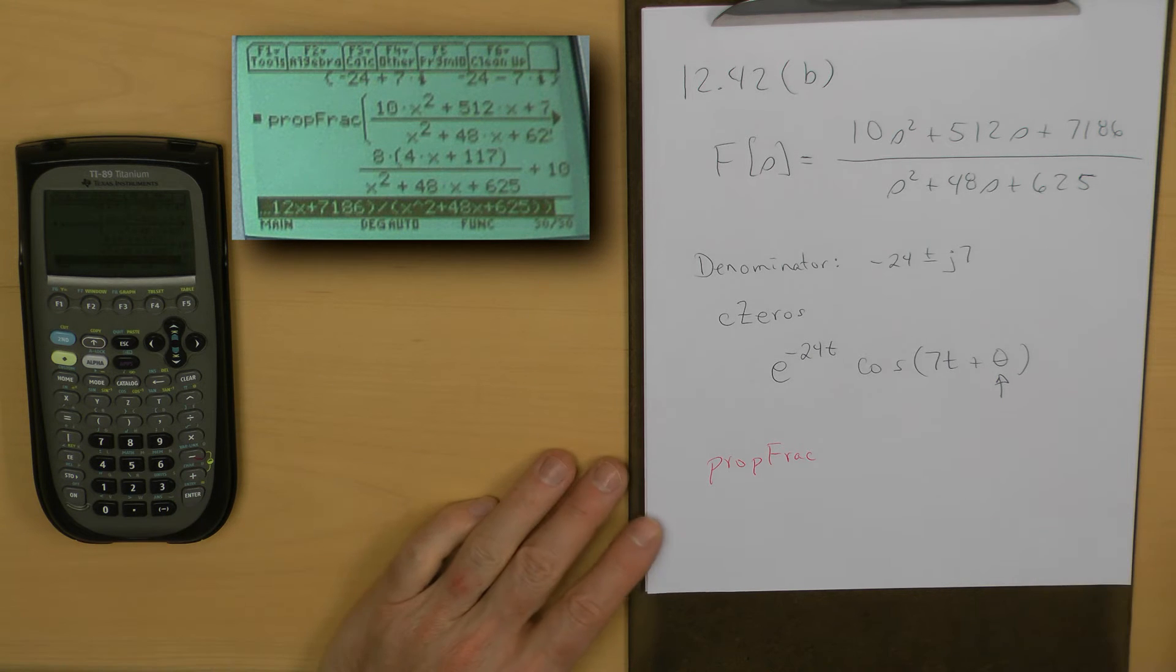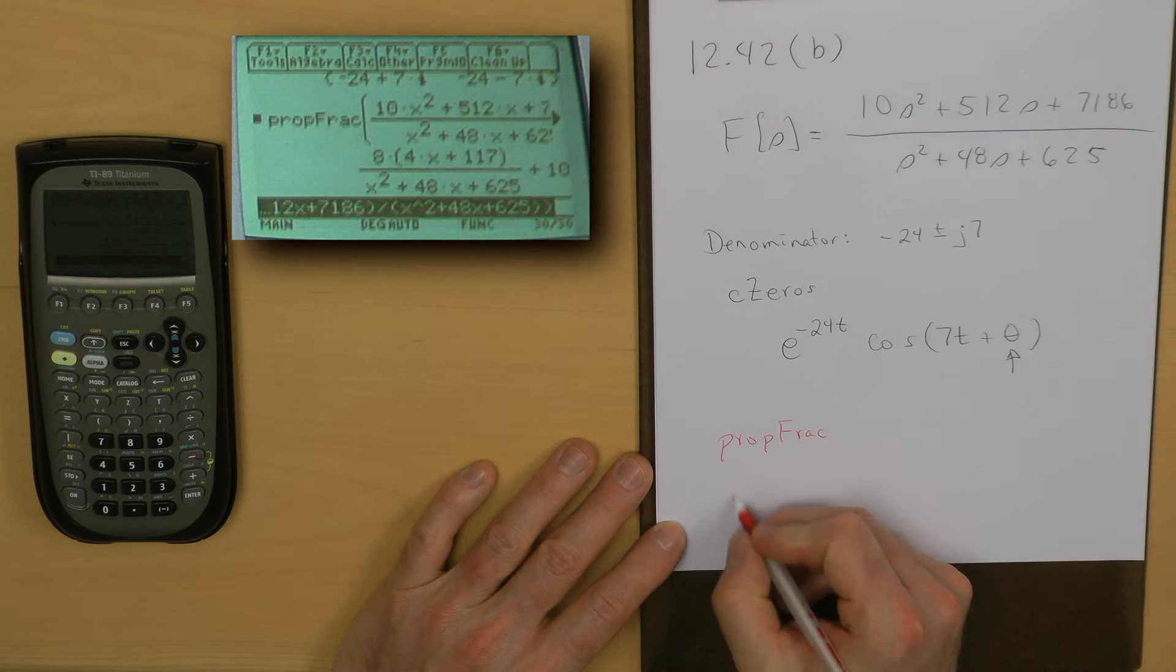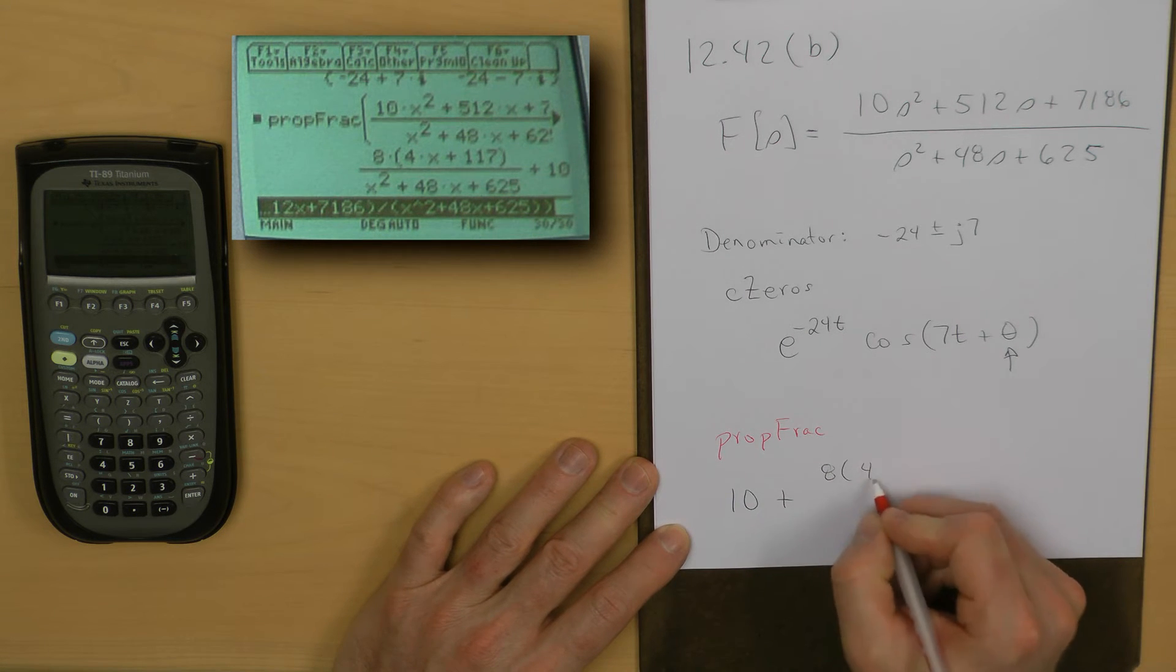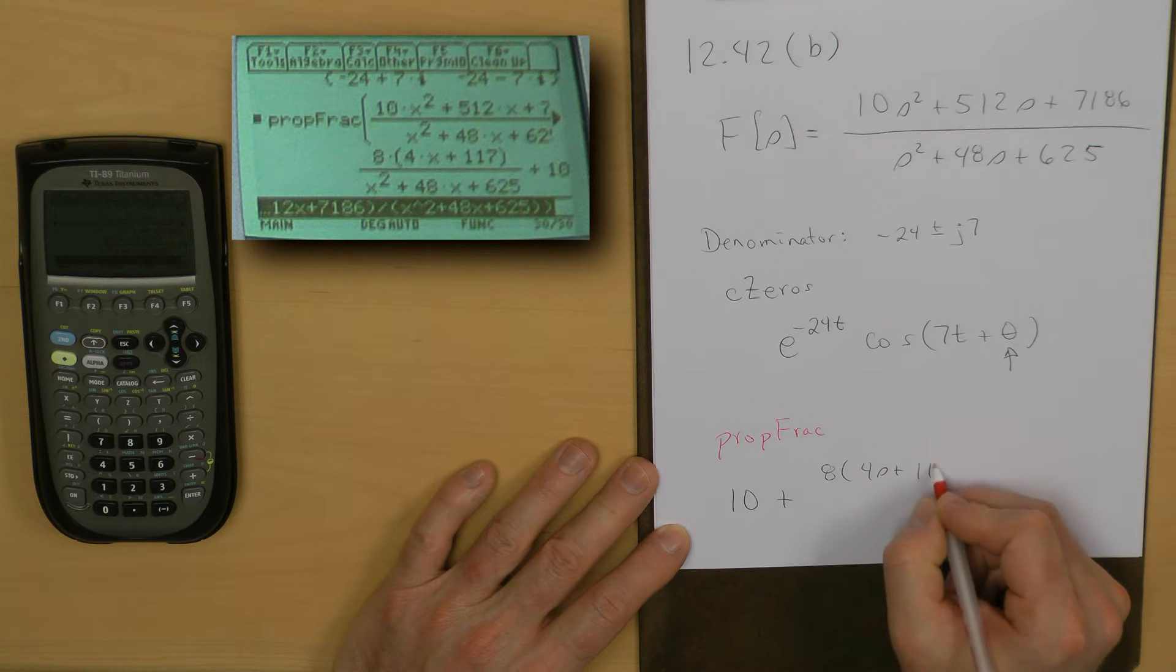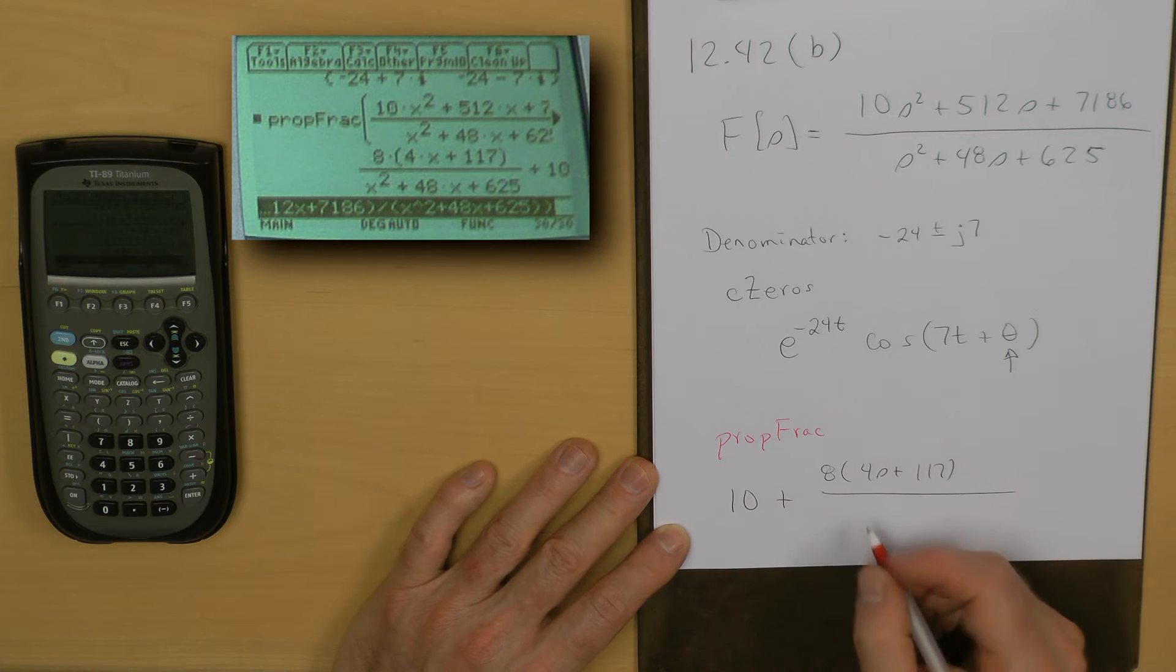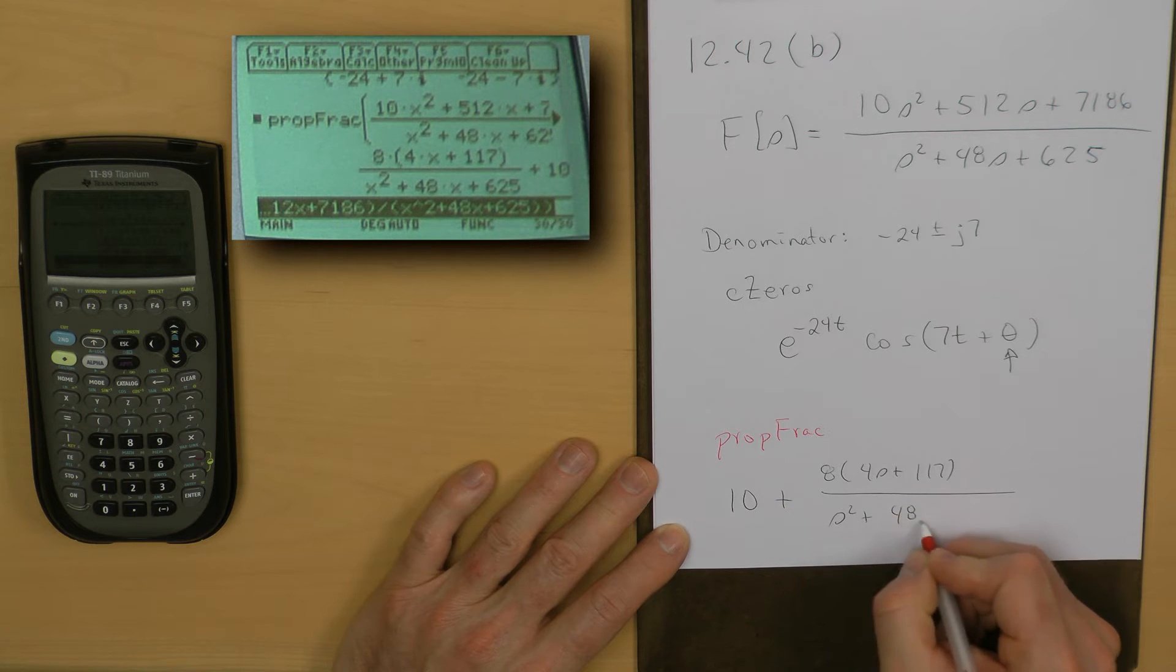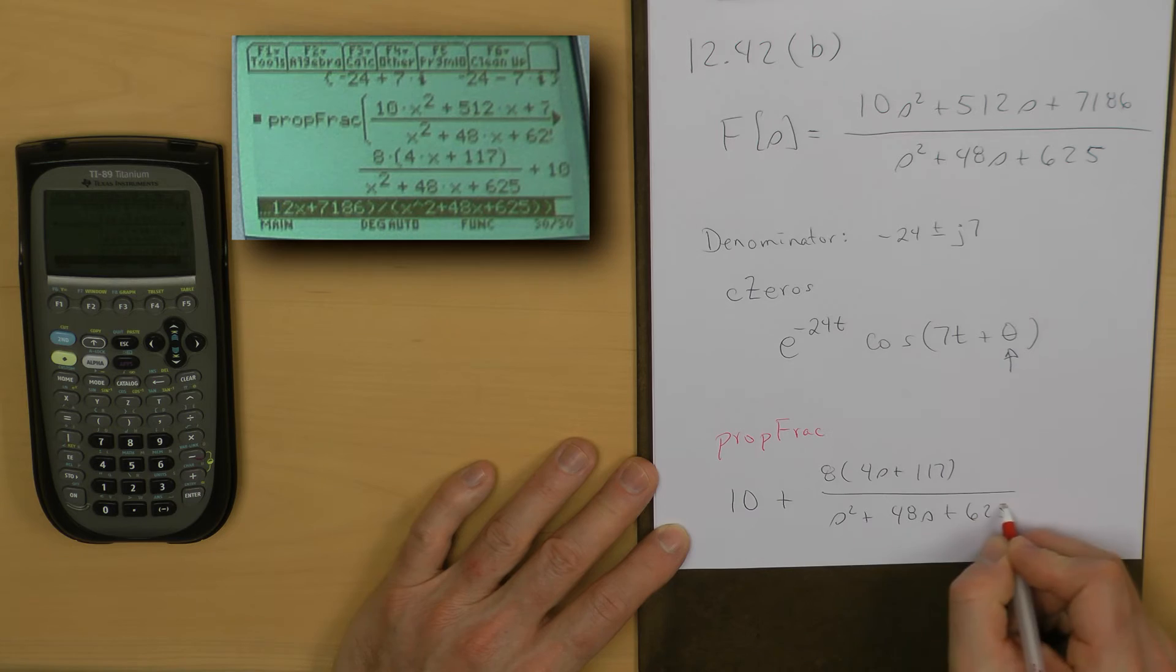Hit enter, and now I have my F of S as 10 plus the expression 48 times 4S plus 117 all over S squared plus 48S plus 625.